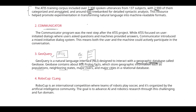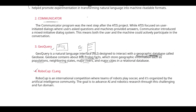The fourth resource is RoboCup. RoboCup is an international competition organized by the AI community where teams of robots play soccer. The goal is to advance AI and robotics research through this challenging domain. In order to program these robots to play soccer, they use a specific language called CLang.